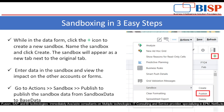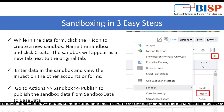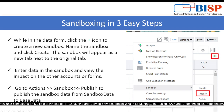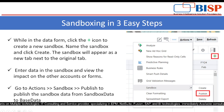We will see how to enable sandboxes in three easy steps. While in the data form, click the plus icon at the corner to create a new sandbox. Name the sandbox and click Create — the sandbox will appear as a new tab next to the original tab. Enter data in the sandbox and view the impact on other accounts or forms. Then go to Action, then Sandbox, and publish the data — it will then be visible in the base data.